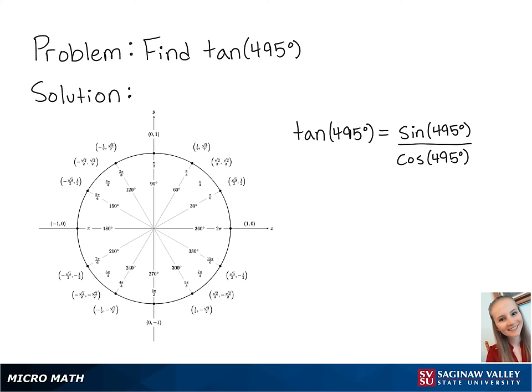Looking at the unit circle, if we want to find 495 degrees, we're first going to rotate around the circle one full time to be at 360 degrees, and then rotate an additional 135 degrees.